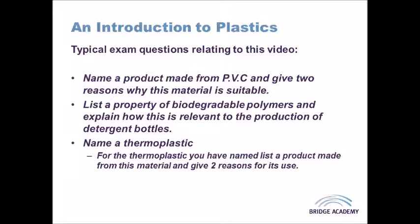Similar to how metals can be treated with heat to change their properties, plastics can be improved by adding certain things. Fillers such as sawdust, wood flour, or crushed stones can bulk up the plastic without using costly polymer granules, and can increase strength or hardness, or reduce brittleness so the material doesn't snap as easily under tensile stress.